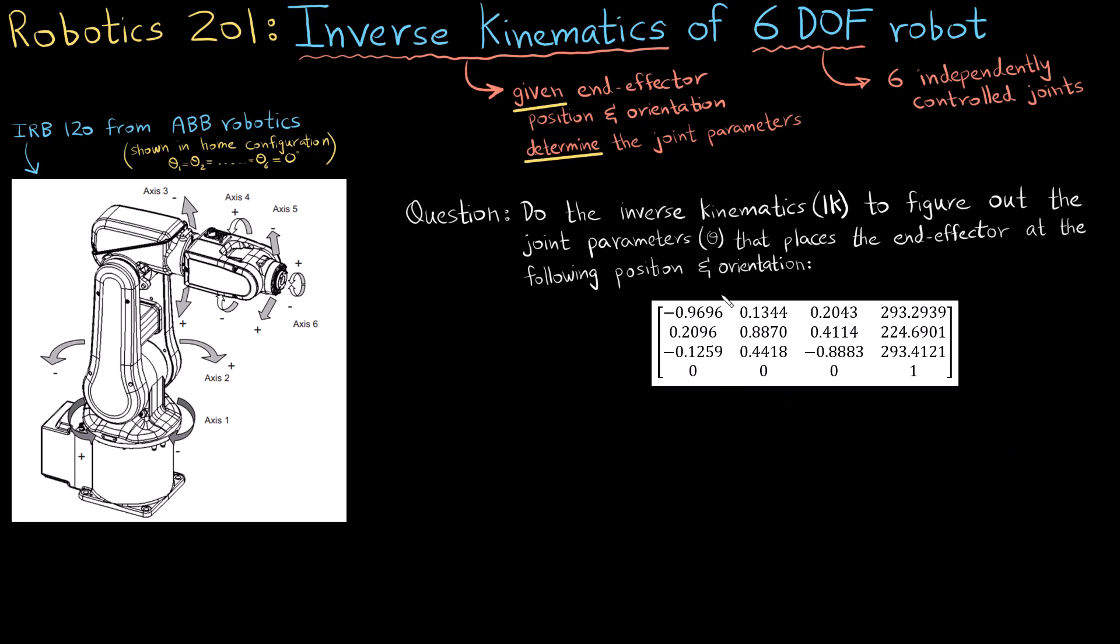Just to quickly recall what does a homogeneous transform represent. The homogeneous transformation basically represents two things. So the bottom row is always three zeroes and a one and the first three cross three matrix is the orientation matrix which is the orientation.